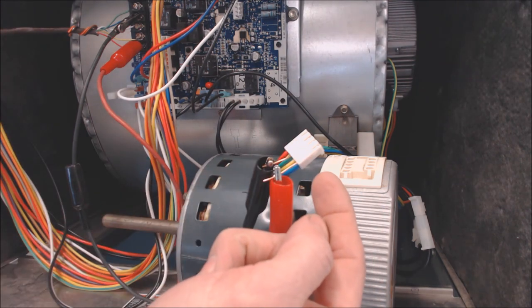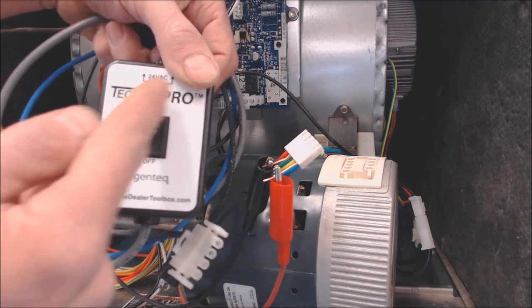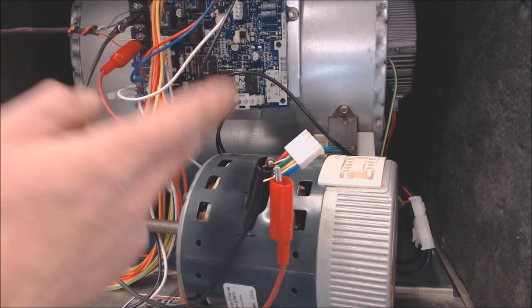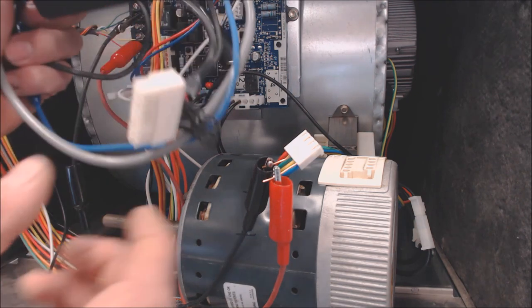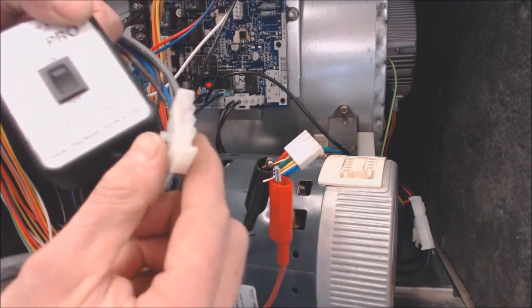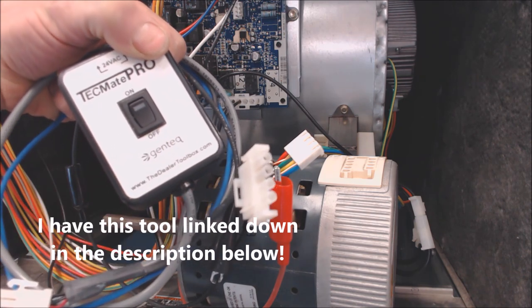So this is how you can get away with not using a GenTech TechMate Pro for your diagnosis with the variable speed blower motor for 3.0 models only. If you're dealing with an ECM 2.3 model, then that one has a 16-pin connector and that one's a little bit more complicated. But if you don't want to do this, then I would suggest picking up one of these that makes the diagnosis very simple.